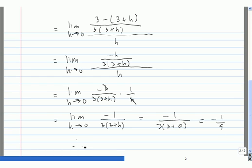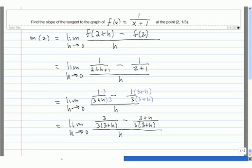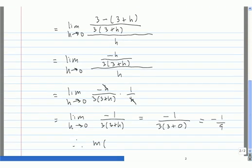Therefore, the slope of the graph at the point where x equals 2, which we denote by m(2), is equal to -1/9.